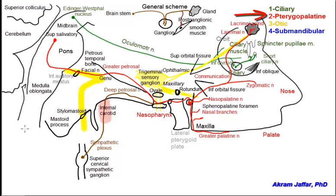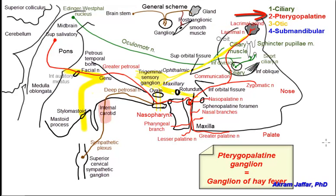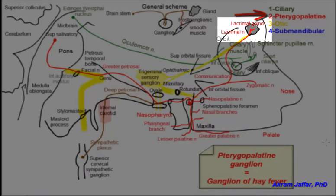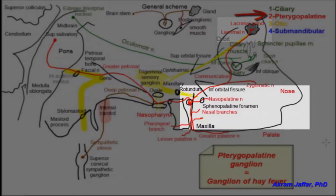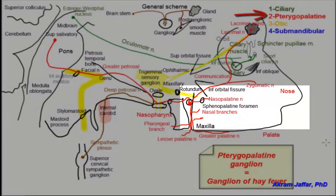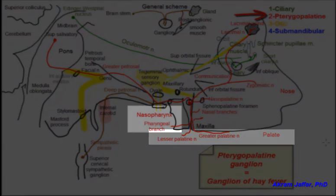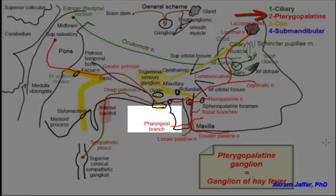There are also lesser palatine nerves that supply the soft palate and a pharyngeal branch for the nasopharynx. The pterygopalatine ganglion is sometimes called the ganglion of hay fever, because if stimulated it causes streaming of the eyes through its branch to the lacrimal gland, running of the nose through its nasal branches and nasopalatine nerve, and increased mucus secretions from the palate and nasopharynx through the pharyngeal branch, greater palatine, and lesser palatine nerves.